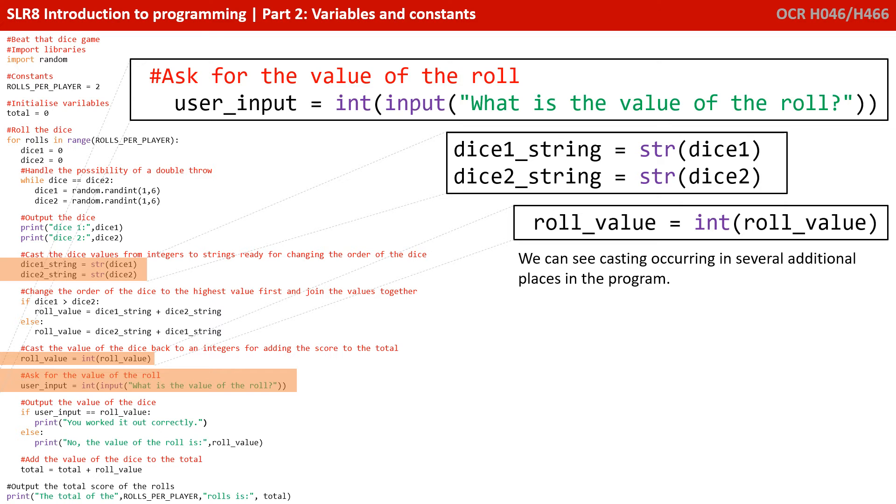You can see lower down, we take the contents of the variable role value, and we cast and convert it to an integer before storing it back into role value. We can actually cast from any data type to any other data type.